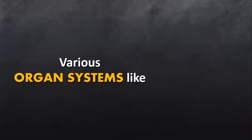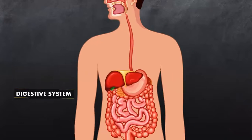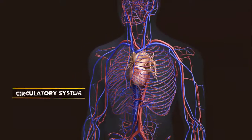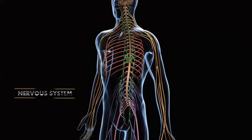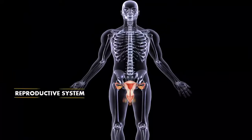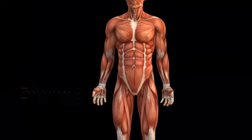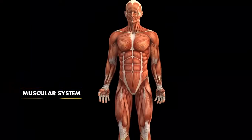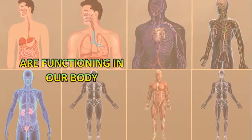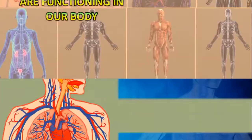There are different types of organ systems. First is the digestive system, then the respiratory system, then the circulatory system for blood circulation, the nervous system, the excretory system — through which waste is removed from the body — the reproductive system, the skeletal system, and the muscular system. All these systems in the body function in coordination with each other.